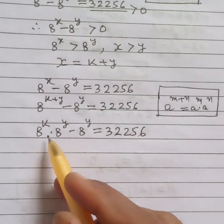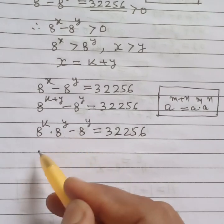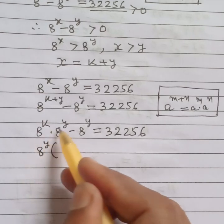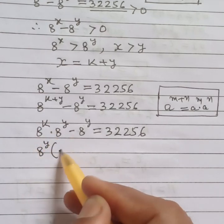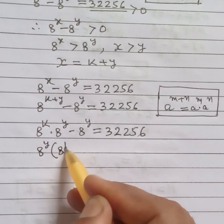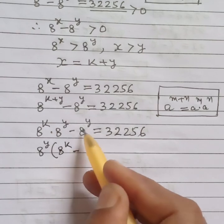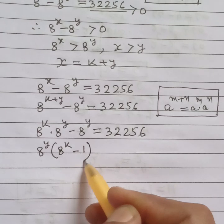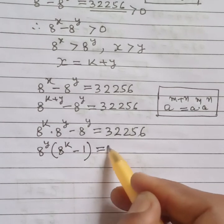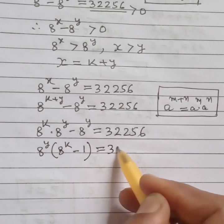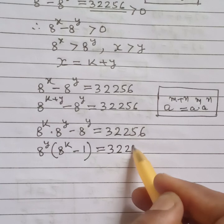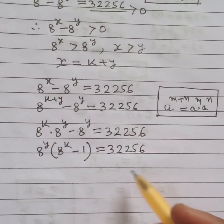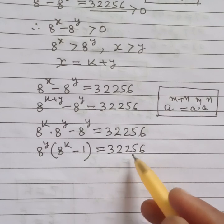Factoring out 8 to the power y from both terms on the left side, we get 8 to the power y times (8 to the power k minus 1) equals 32256. Now we factorize 32256.